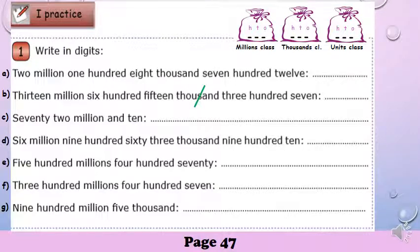Page 47. Also write in digits. Let's read part B. 13,615,307.